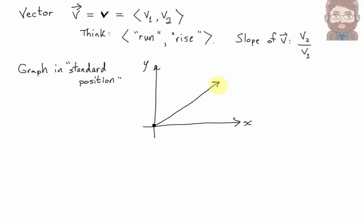If you want to graph a vector, you normally just assume it starts at the origin. You could start it at any point you want, but if an initial point is not specified, we'll often just graph them in this position.